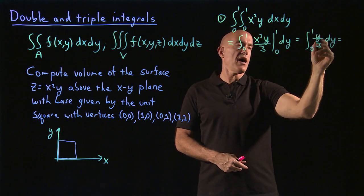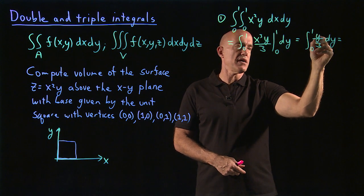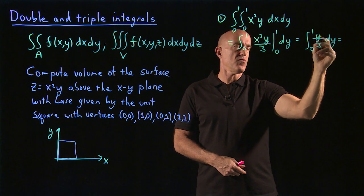Then this is y squared over 2. And we plug in the upper limit 1, which will be 1/6.